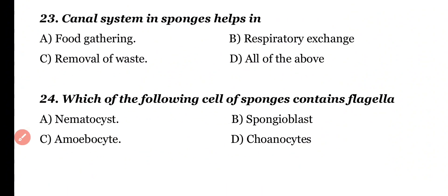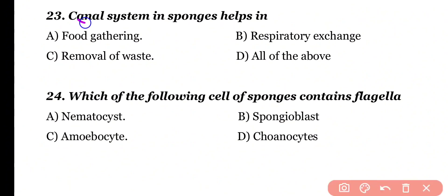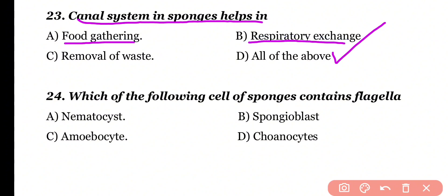Question number 23. Canal system in sponges helps in: food gathering, respiratory exchange, removal of waste, or all of the above. Correct answer is option D. Canal system is mainly responsible for food capturing, respiratory exchange of gases, and removal of waste from the body.